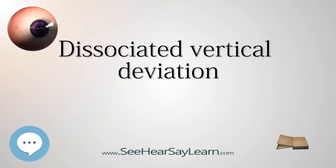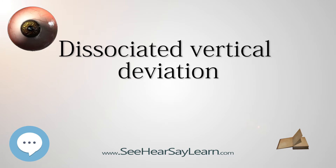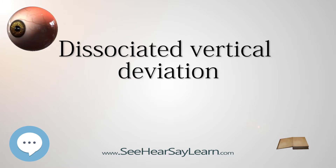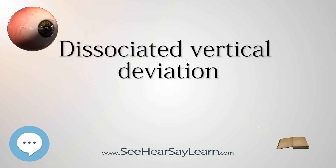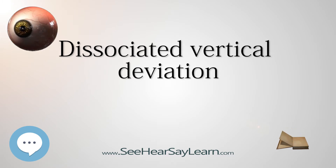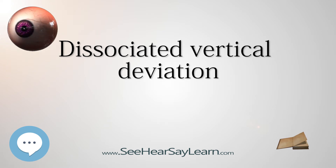Characteristics: The eye drifts upward spontaneously or after being covered. The condition usually affects both eyes, but can occur unilaterally or asymmetrically. It is often associated with latent or manifest latent nystagmus, and as well as occurring with infantile esotropia, can also be found associated with exotropias and vertical deviations.